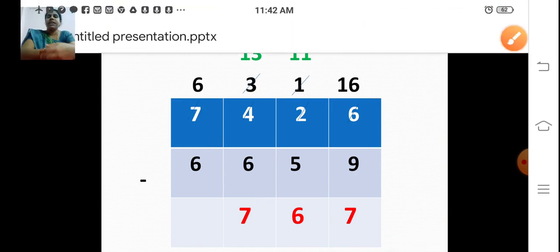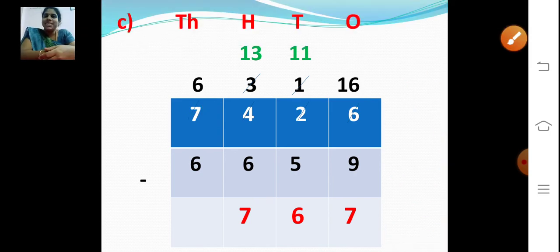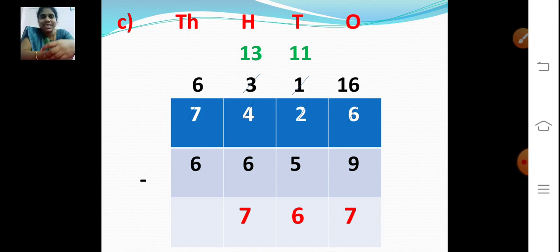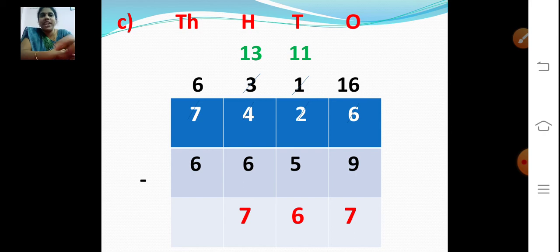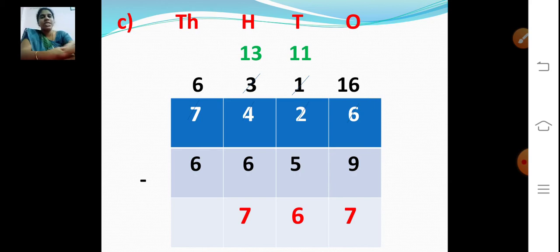Now the thousands place: 6 minus 6 is 0, so no need to put 0 in front. My answer is 767. When you subtract 7,426 minus 6,659, the answer is 767. First subtract ones: 6 minus 9 not possible, borrow from tens, becomes 16. 16 minus 9 is 7. Tens becomes 1; 1 minus 5 not possible, borrow from hundreds giving 11. 11 minus 5 is 6. Hundreds becomes 3; 3 minus 6 not possible, borrow from thousands. 13 minus 6 is 7. Answer: 767.